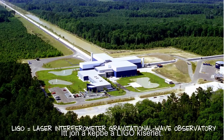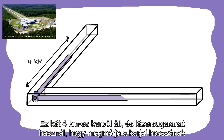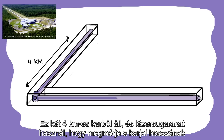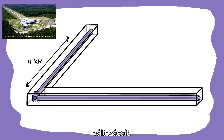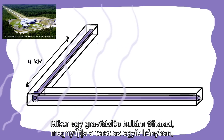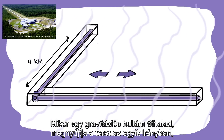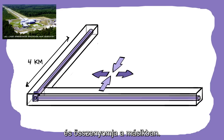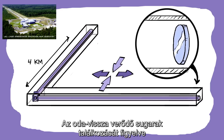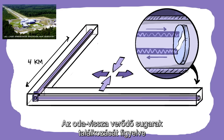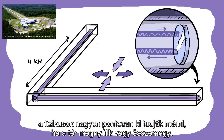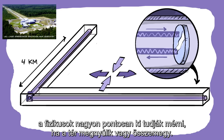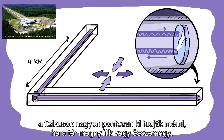This is where the LIGO experiment comes in. It has four kilometer long tunnels and uses lasers to measure the changes in the distance between the ends of the tunnels. When a gravitational wave comes through, it stretches space in one direction and squeezes space in the other direction. By measuring the interference of the lasers as they bounce between the different points, physicists can measure very precisely whether the space in between has stretched or compressed.